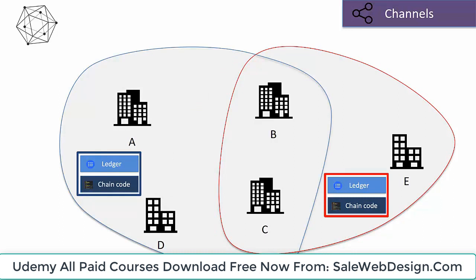Here's another scenario. Let's say B, C, and E have decided to launch a blockchain network where all their transactions are visible only to B, C, and E. And A, B, C, and E also launch a separate network for certain specific transactions. In this scenario, there is no common channel — there are two separate channels for different types of transactions. On one channel, visibility is restricted to A, B, C, D, and on the other channel, visibility is restricted to B, C, E. B and C are members participating in both channels and have visibility into both ledgers.